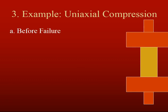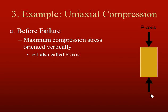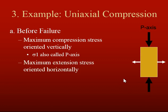I'll talk about the material before failure happens, when it's under this uniaxial compression. The maximum compression stress is oriented vertically — sigma one, also called the p-axis. And then the maximum extensional stress is oriented horizontally, 90 degrees away from the maximum compression stress. This is our sigma three, also called the t-axis in seismology.